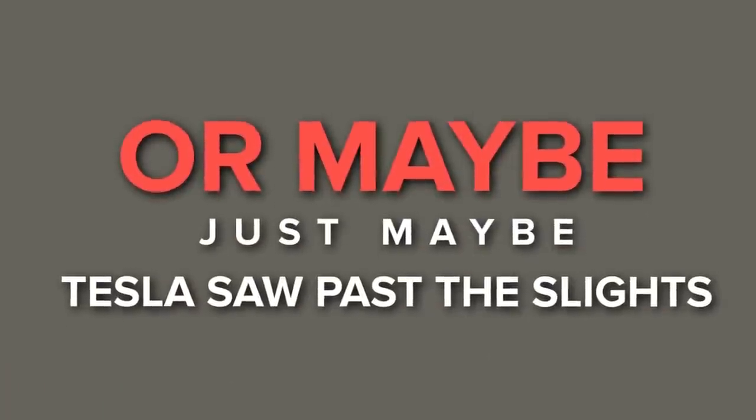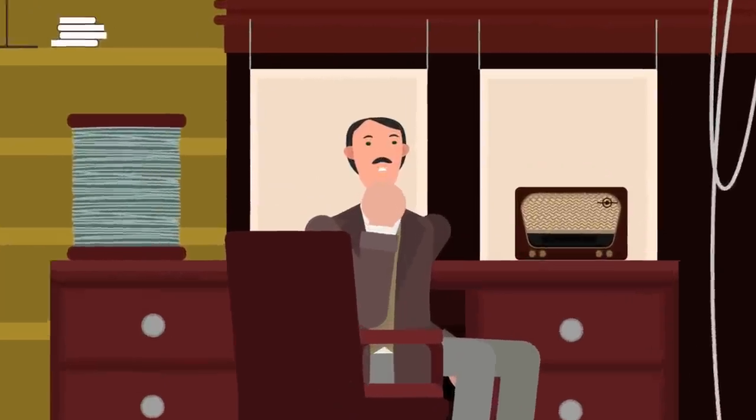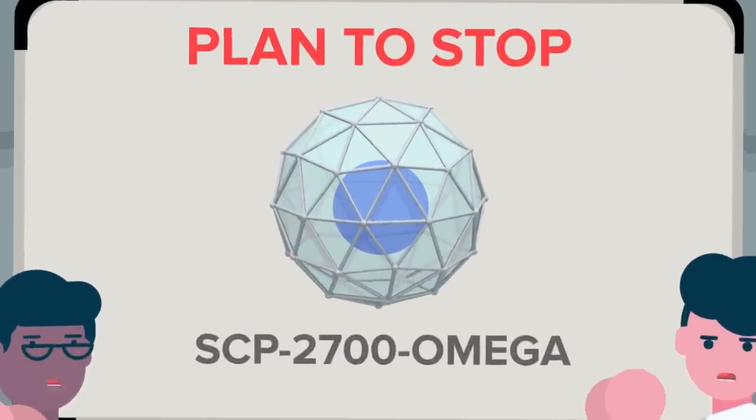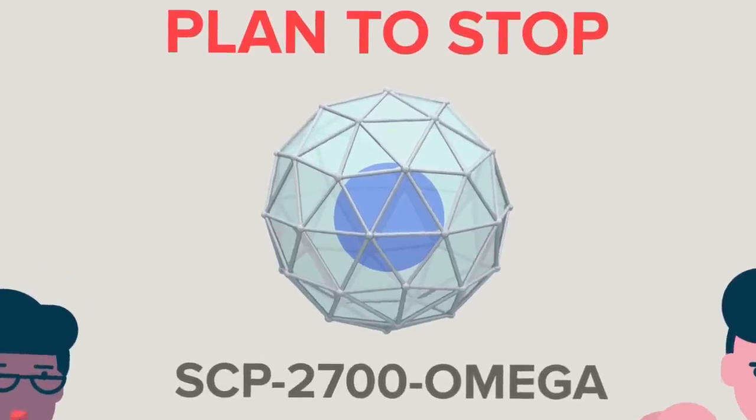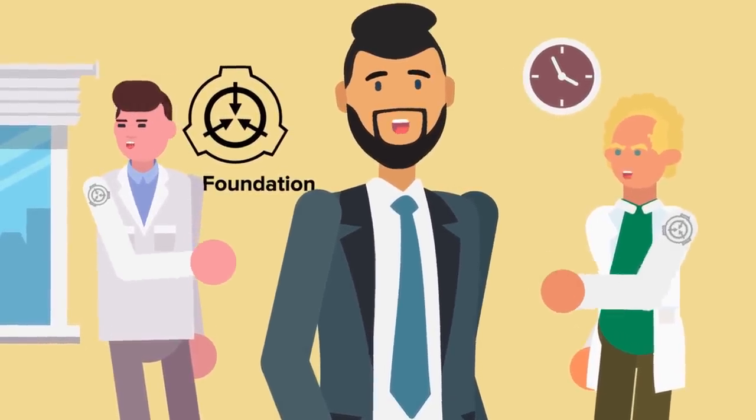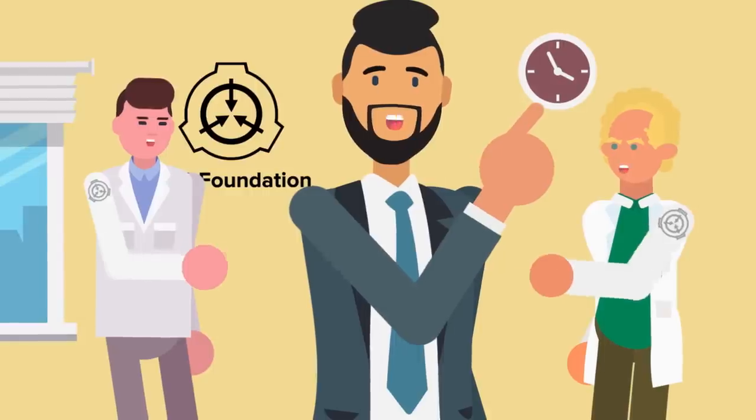Or maybe, just maybe, Tesla saw past the slights. Maybe he had so much faith in humanity that he trusted we would one day be able to figure out how to stop SCP-2700-Omega, and save both universes in the process. No matter his reasoning, all we can do now is place our hope in the SCP Foundation's top minds to find a solution, but the clock is ticking.